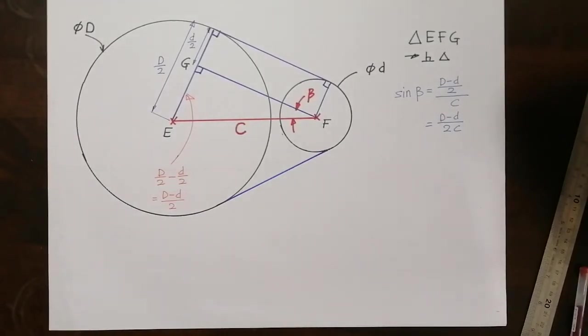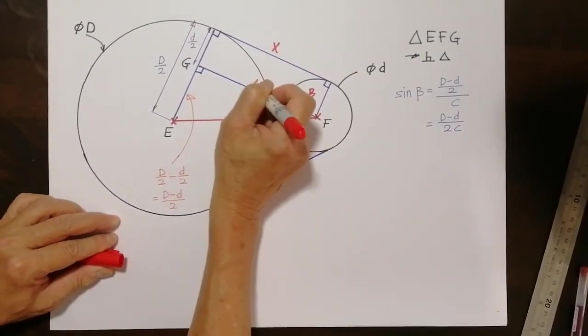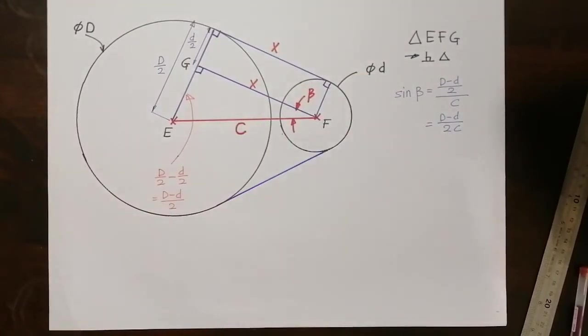Another thing we need to take note is that on that right angle triangle, if I say the belt length, that is the tangent length is X, then this will also be X. So how is X, C, and the distance related? I mean, the triangle is related. We can use the Pythagorean theorem.